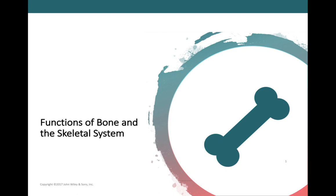Welcome back to Chapter 6, the skeletal system, where we're going to start learning about the bones. Chapter 7 and Chapter 8 will refer to the two different divisions of the skeleton, so in Chapter 6 we're going to do an introduction to the skeletal system. We're going to talk about bone cells and the histology of bone, different types of bones, fractures, how bones heal, and how bones form.